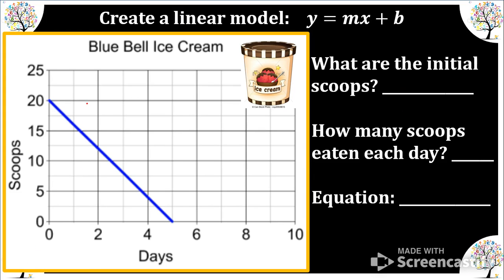OK, guys, our last one. We have Bluebell ice cream. We can see that it is decreasing. Our x is days. And our y is total scoops. Now, this is important again. The carton or the tub. OK, so on day zero, we have twenty scoops.